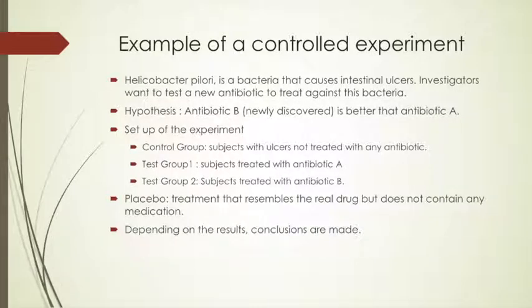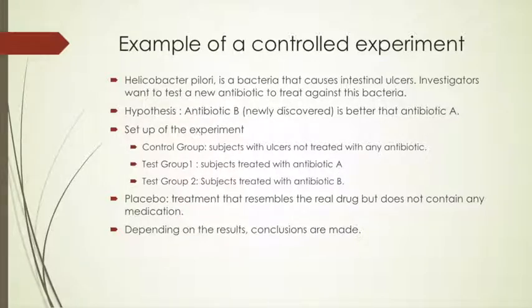An example of a controlled experiment — and this is the bread and butter of the scientific community. Through experiments, we are able to prove our hypothesis and construct new theories that explain the natural world. In this example, we have a bacteria called Helicobacter pylori, which is a bacteria that causes intestinal ulcers. Investigators want to test a new antibiotic to treat against this bacteria. The hypothesis would be that antibiotic B, the newly discovered antibiotic, is better for treating this disease than antibiotic A.